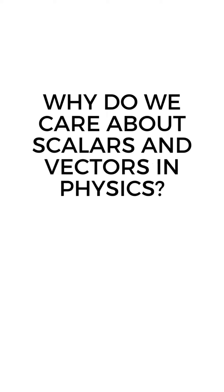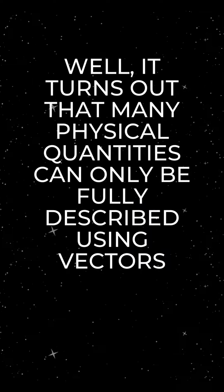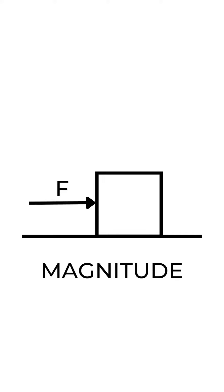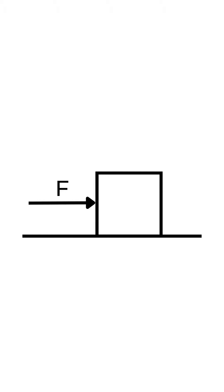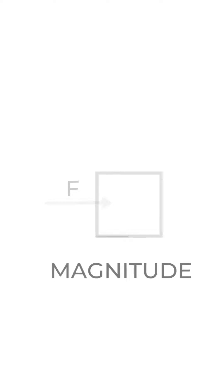So why do we care about scalars and vectors in physics? Well, it turns out that many physical quantities can only be fully described using vectors. For example, if a force is acting on an object, you need to know both the magnitude and direction of the force. If you only knew the magnitude, you wouldn't be able to determine which direction the object would move in response to the force.